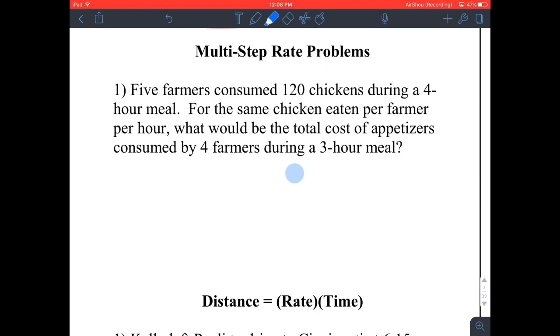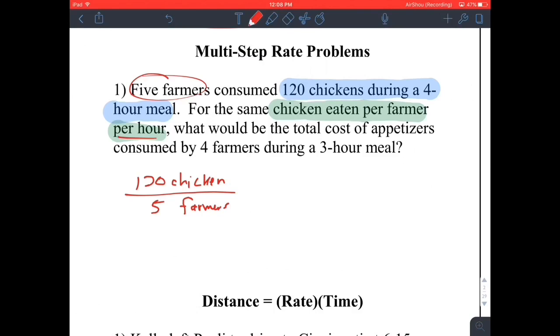At the beginning, we are told 120 chickens for a four-hour meal. Then it tells us the relationship: chicken eaten per farmer per hour. So the chickens eaten is 120 chickens. By the way, the word per means divided by, which means fraction. Per farmer, so there are five farmers, and then it says per hour, that happened in four hours. It's a complex fraction, no doubt.